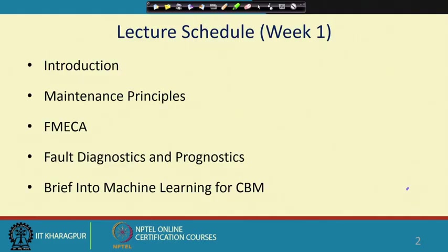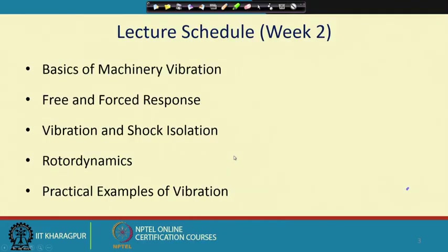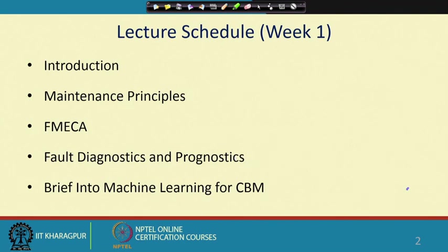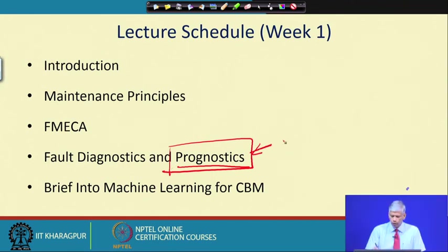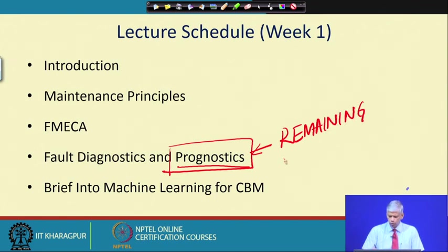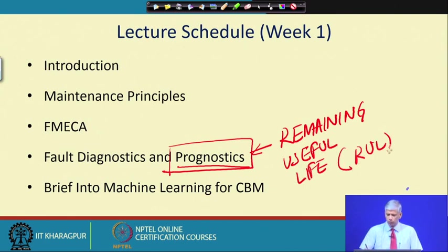We will also cover certain definitions used in fault diagnostics: what is a fault, what is detection, what is isolation, and what is prognostics. Once we are maintaining a machine, everybody in the industry would like to know how long the machine at its present condition is going to last — that is covered by prognostics. Prognostics is an important area where we find out the remaining useful life, or RUL, of a machine or component.